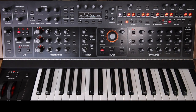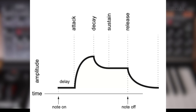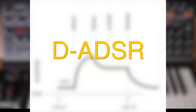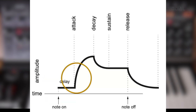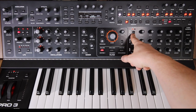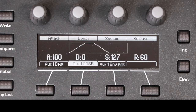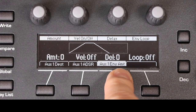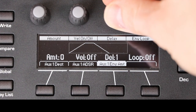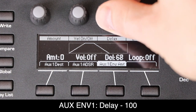All the Pro 3's envelopes have a hidden fifth stage — delay — making them DADSRs. Delay sets a delay between the time the envelope is triggered by pressing a key and when the attack portion actually begins. I'll use aux 1's delay stage to increase the fade-in time of the LFO after I hit a key. Press the button under tab 3 to view the delay amount on the OLED. Set delay to 100.